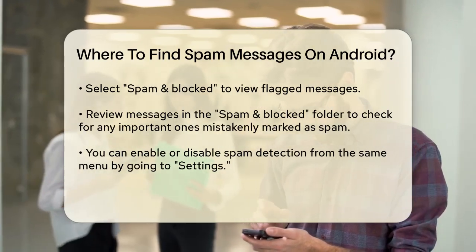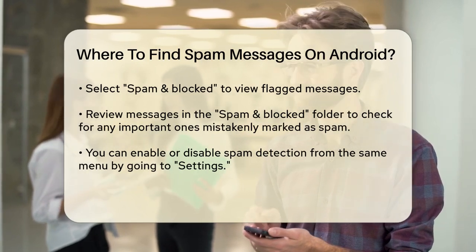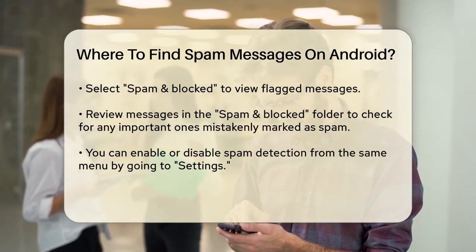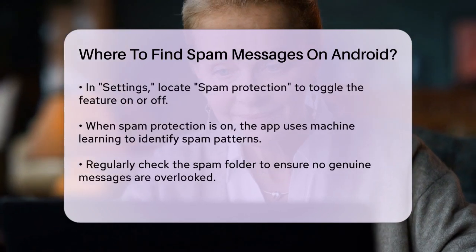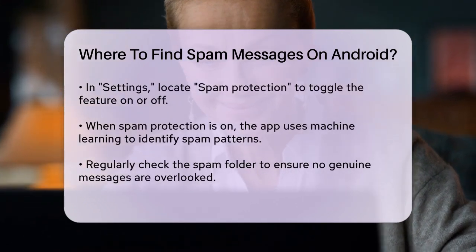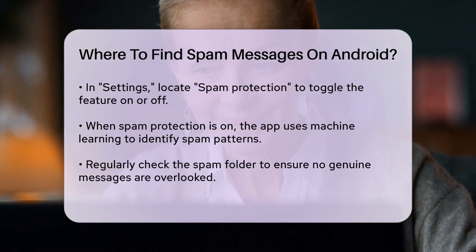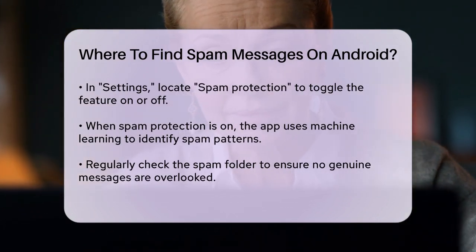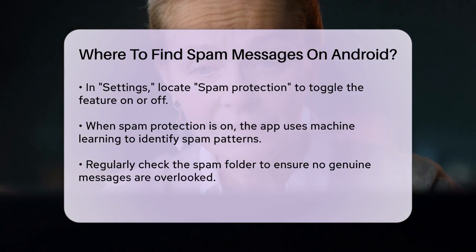If you want to enable or disable spam detection, you can do so from the same menu. Tap Settings, and then find Spam Protection. Here, you can toggle the feature on or off. When it's on, Google Messages will use machine learning to detect known spam patterns in your messages and filter them out.